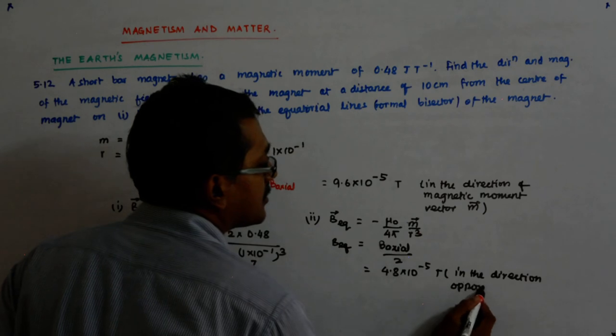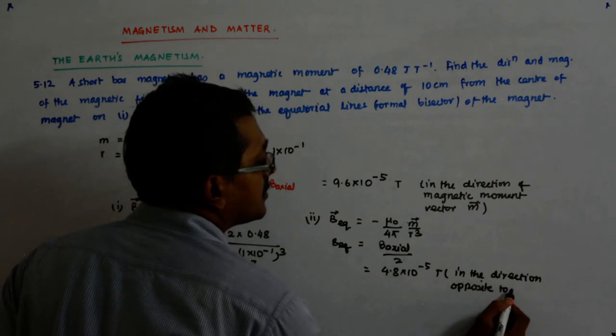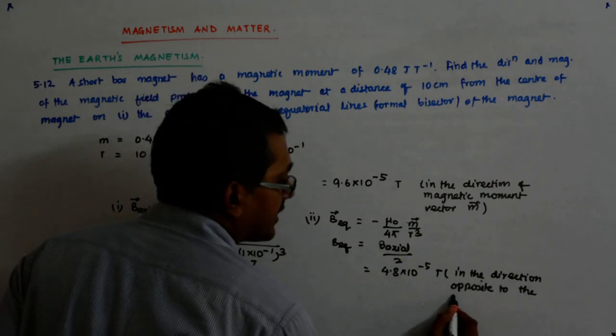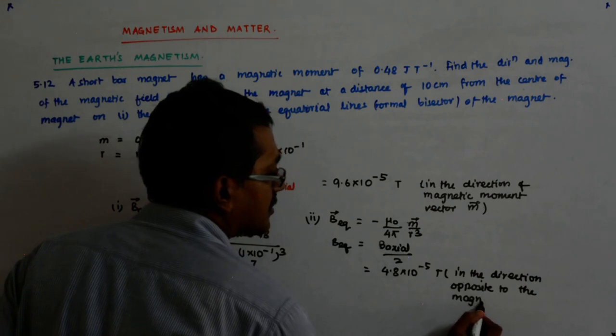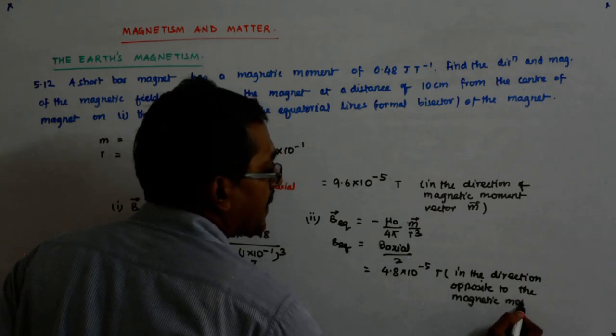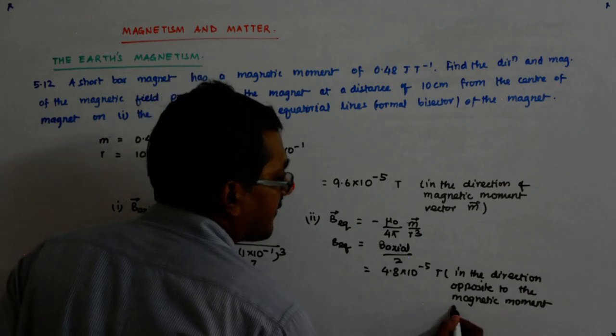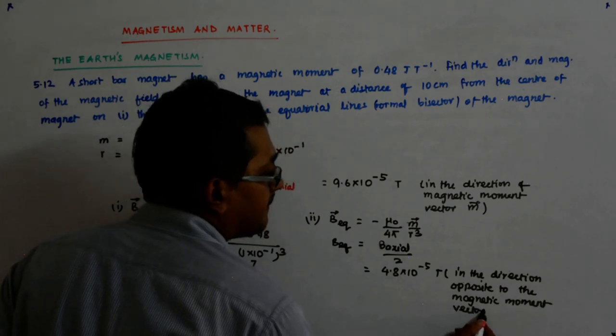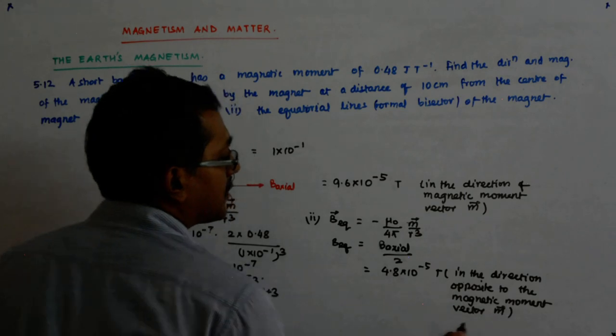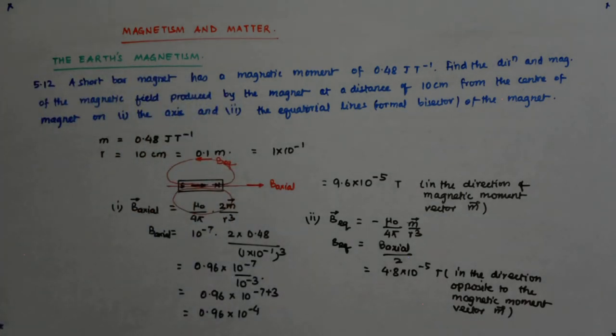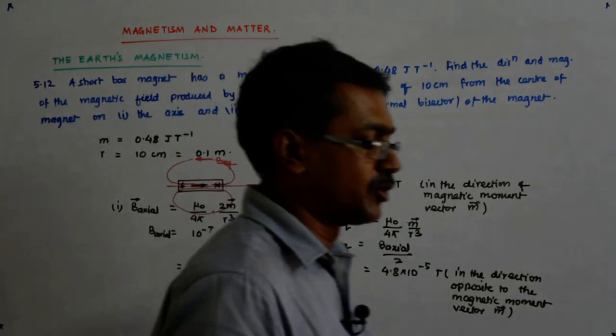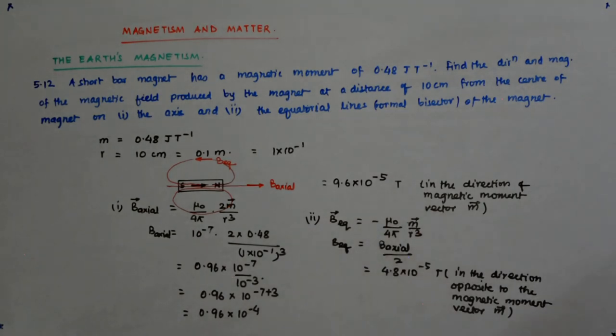Opposite to the magnetic moment vector M. Consider the direction opposite to the magnetic moment vector M.